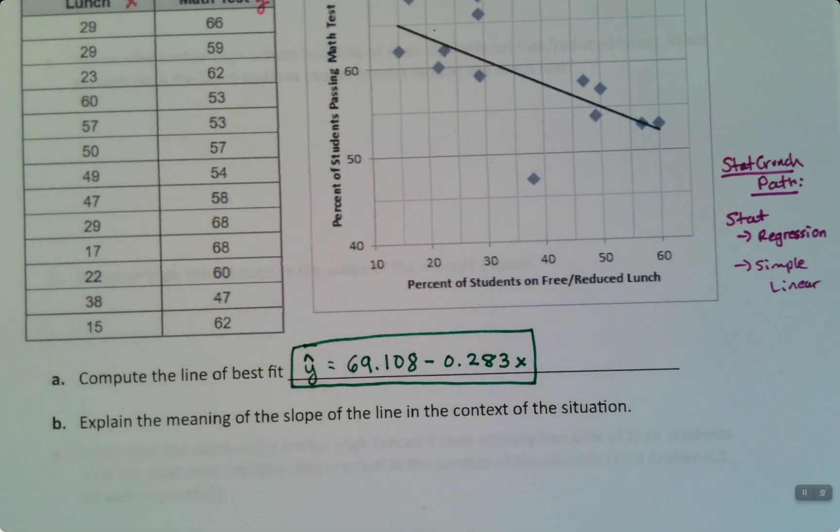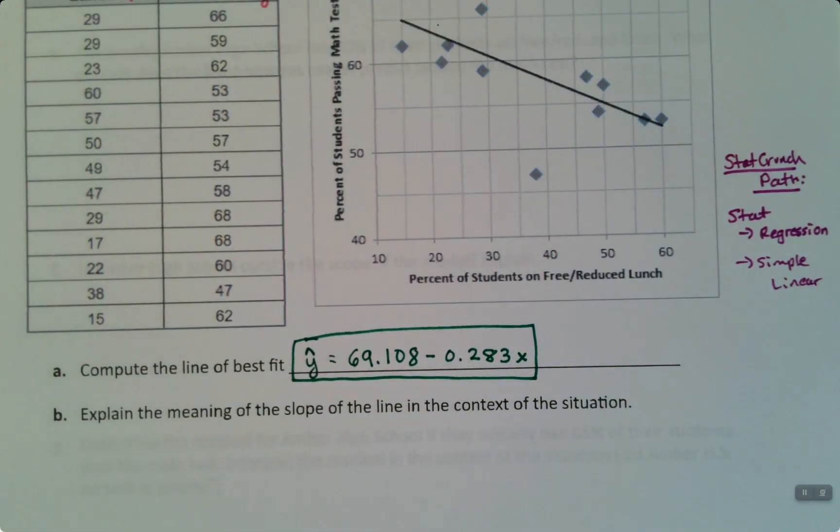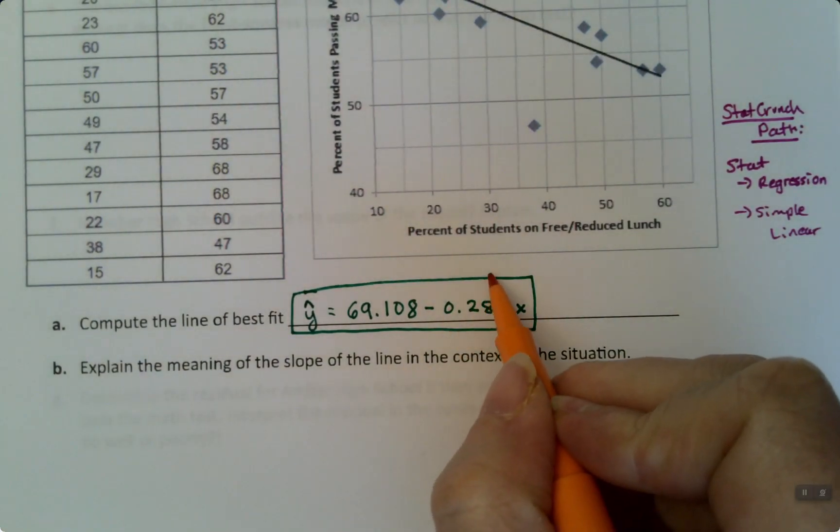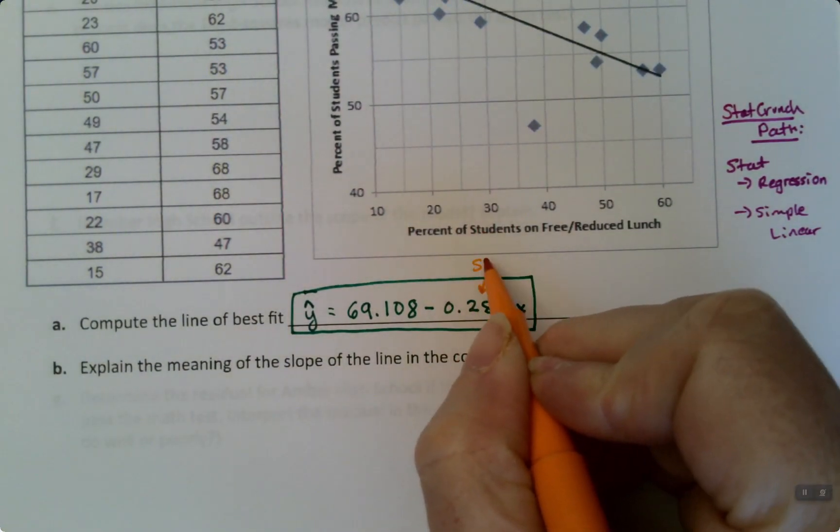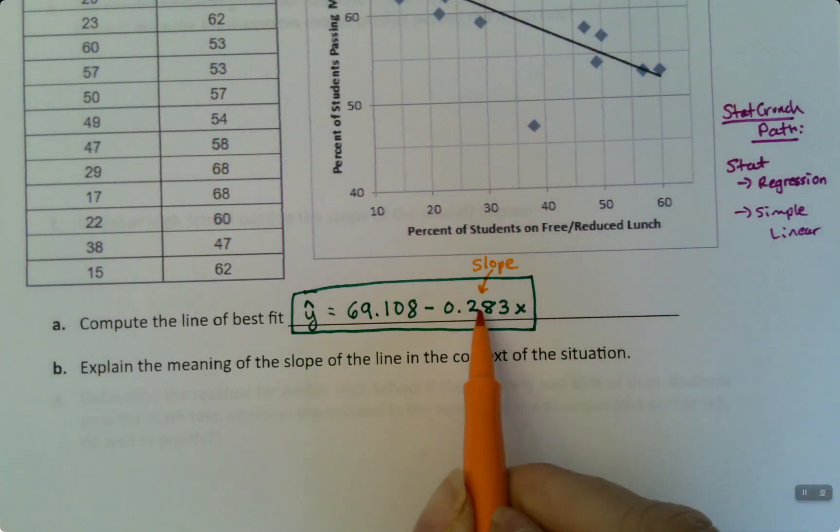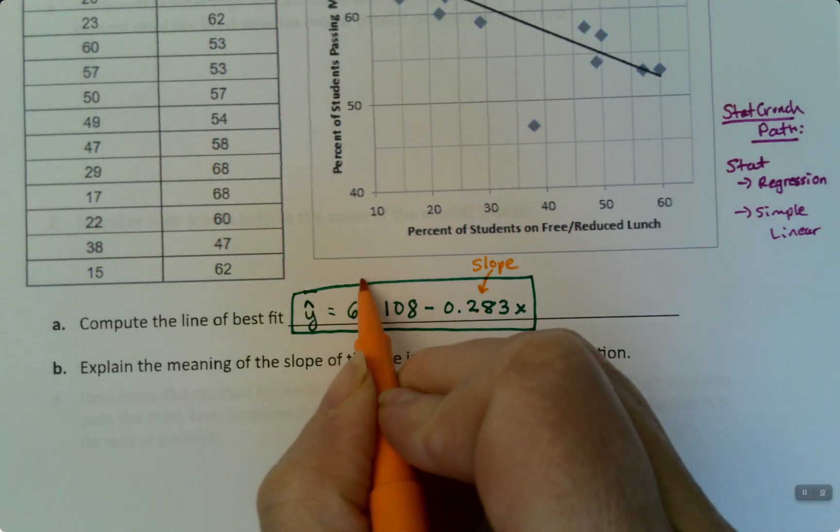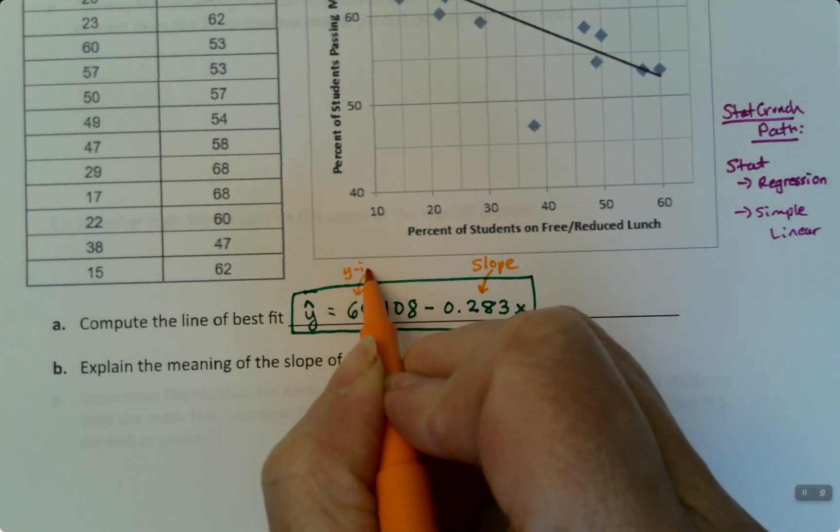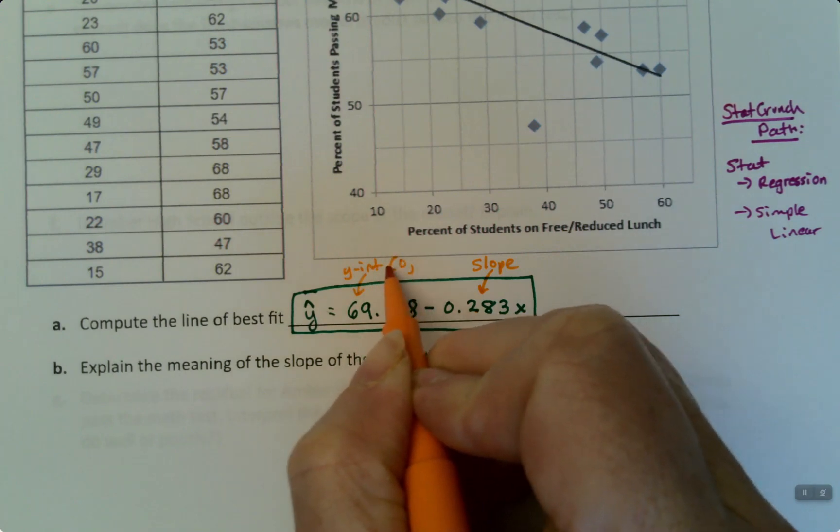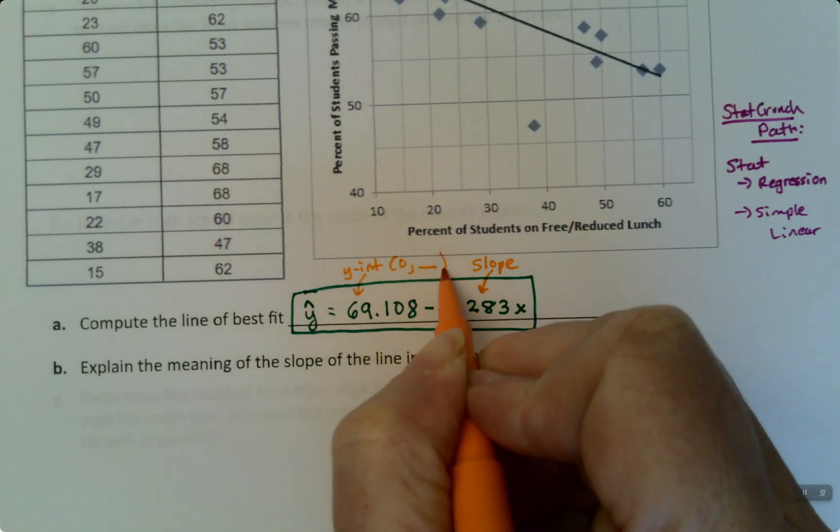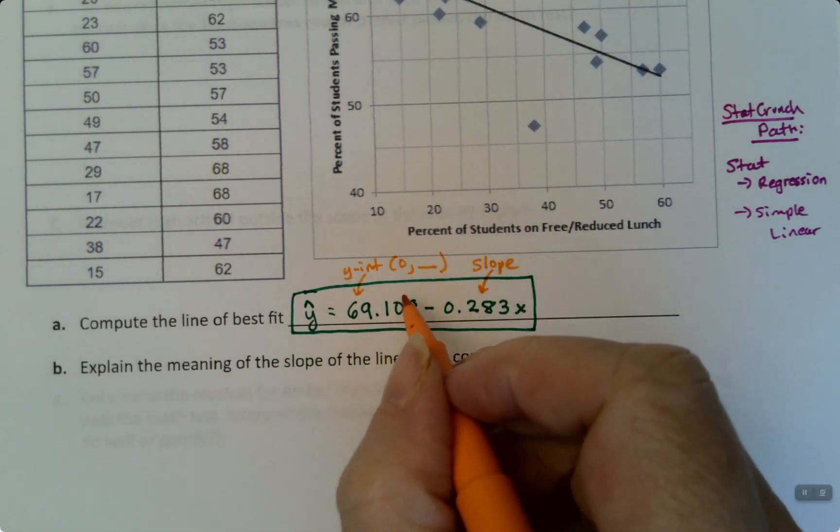And then down below I'm going to ask questions like what's the slope and what's the Y-intercept. So the slope is always the one that's multiplied by the X. So that's the slope right there. And the Y-intercept is always zero comma that number. So 69.108.